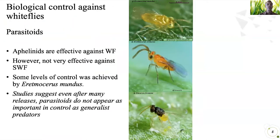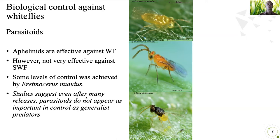Of the parasitoids, there are three species to look out for. Two of them are in the same genus. These are very small, nearly translucent and kind of orange. In some areas there have been considerable releases of parasitoids, but they don't seem to cause as much control as some of the generalist predators.